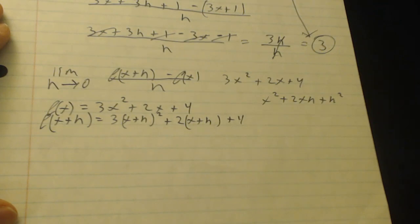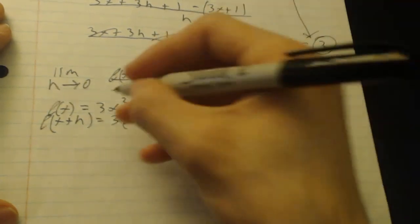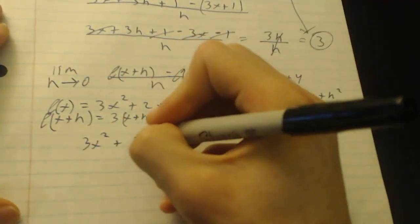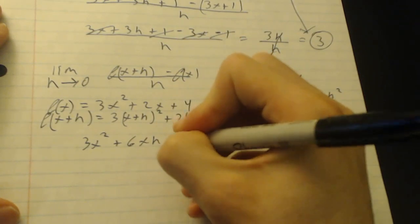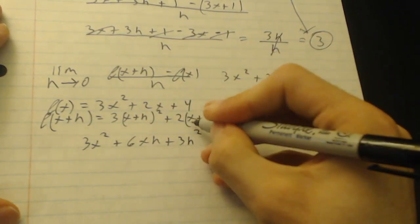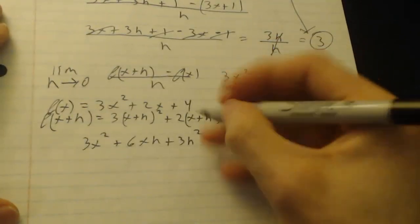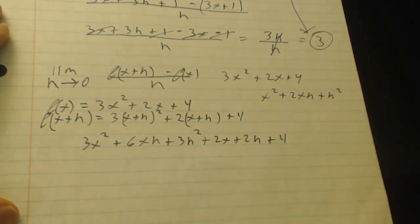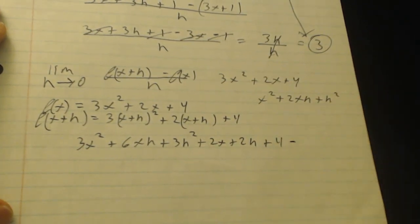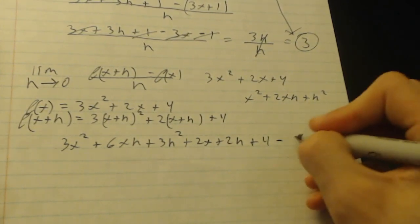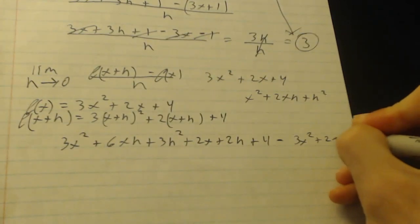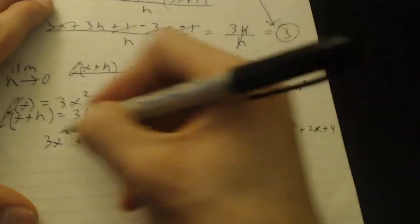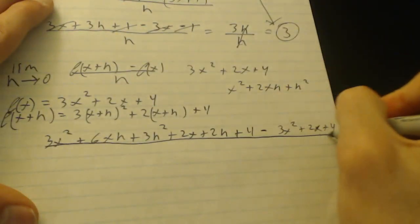Alright, so that would be that foiled out. And now you just bring over the 3. So it would actually turn out to be 3x squared plus 6xh plus 3h squared. And now I'm going to distribute the 2 over this, so we'll be left with plus 2x plus 2h plus 4. Alright, and then, let's see if I can cram this in on the side, minus 3x squared plus 2x plus 4. Alright, all over h of course. Don't forget that. My lines are horrible.